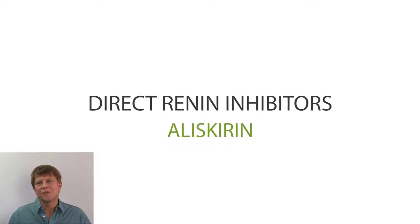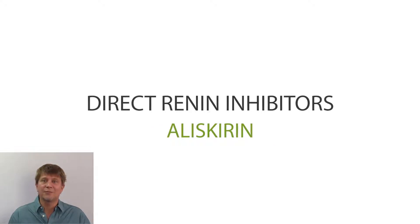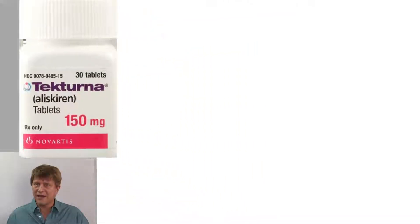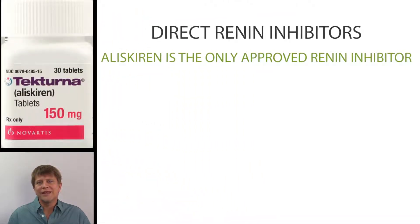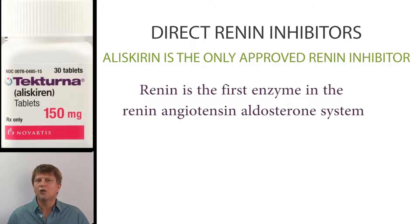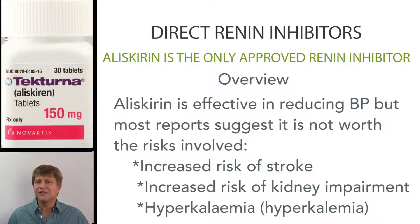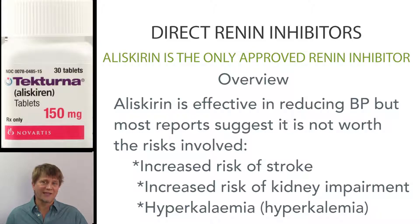Aliskiren is currently the only available direct renin inhibitor. It is part of a series of drug groups that affect the renin-angiotensin-aldosterone mechanism, along with the ACE inhibitors and the angiotensin-2 receptor blockers. While Aliskiren is effective in decreasing blood pressure, other better-studied medications are typically recommended first due to concerns about side effects.